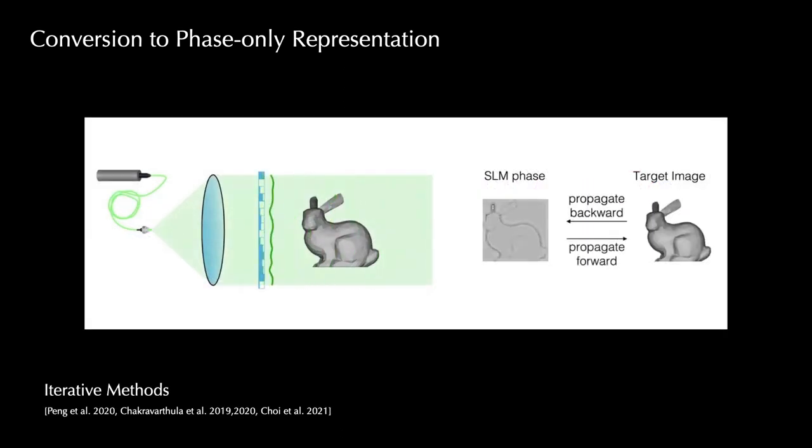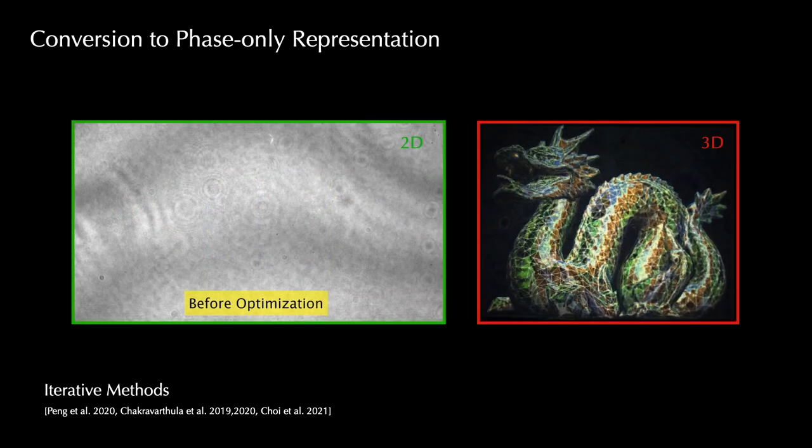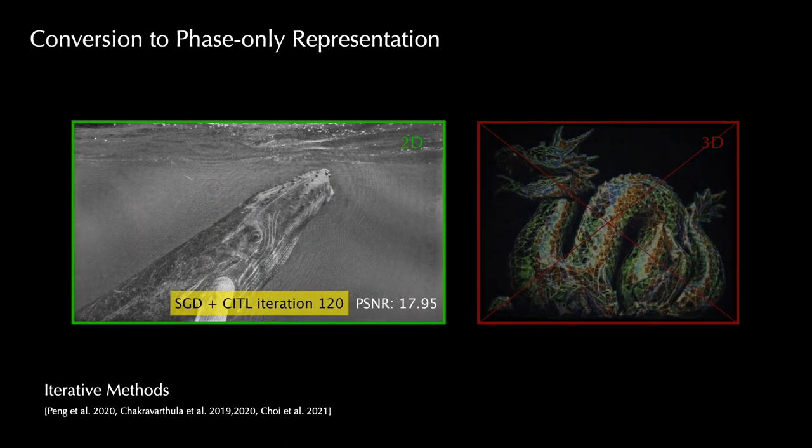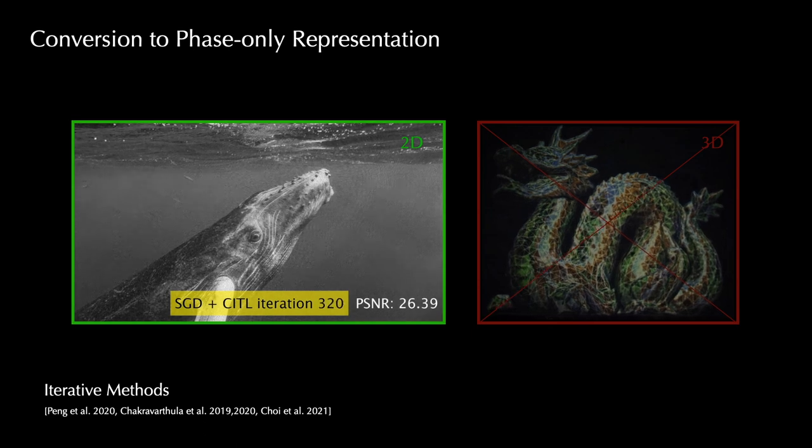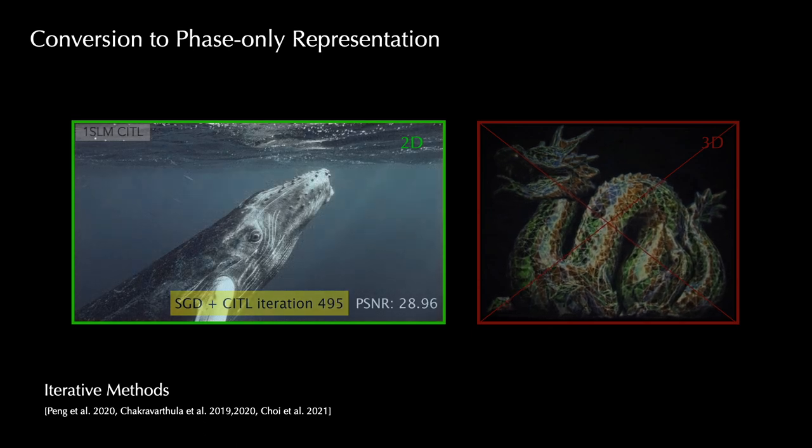One line of methods propagate the wavefield iteratively between the target image and the hologram plane to update the phase pattern. These methods are typically time-consuming, but produce great results for 2D images. However, no compelling results have been demonstrated for continuous 3D scenes.